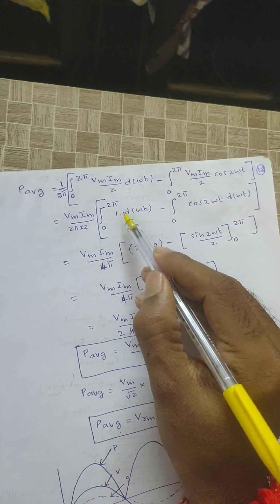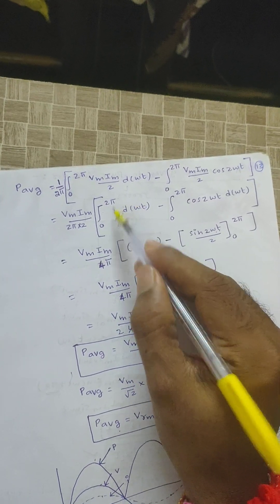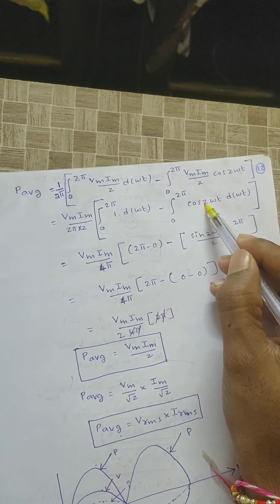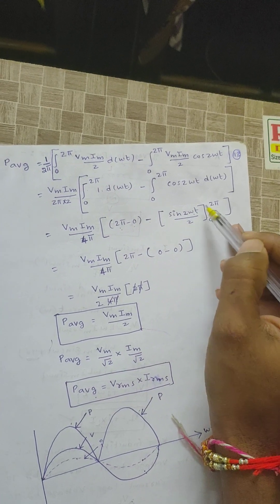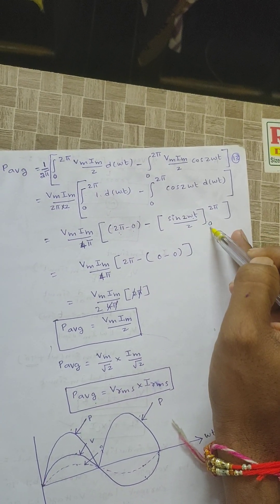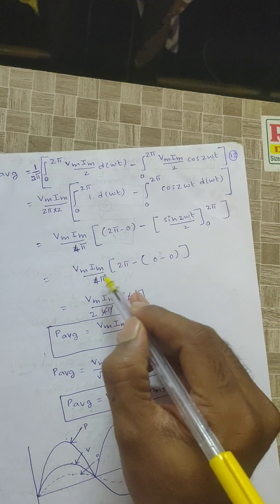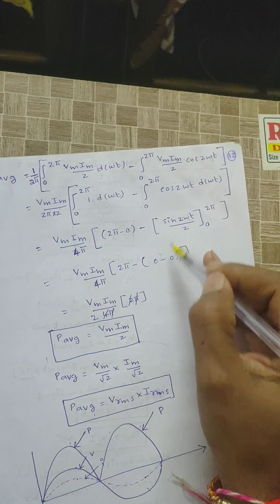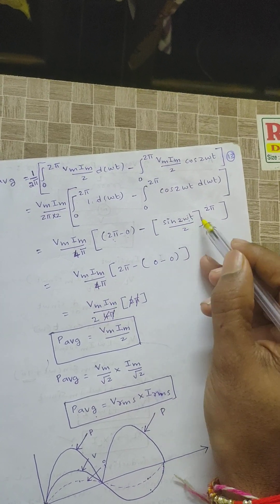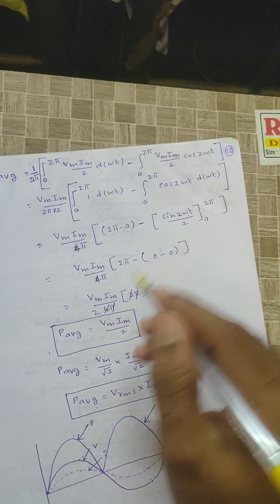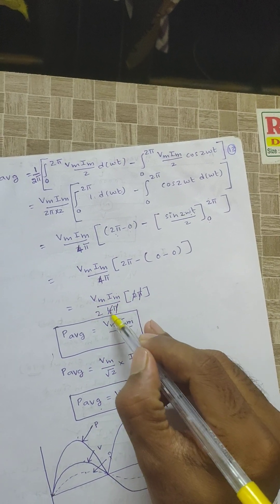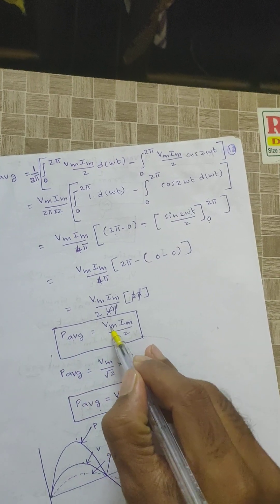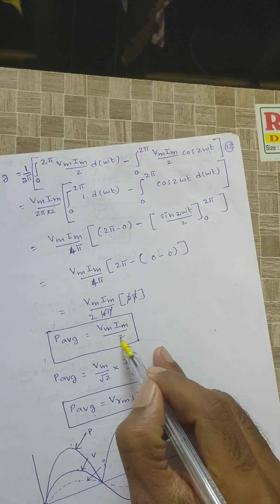Integrating: the integral of 1 gives ωt; substituting upper limit 2π and lower limit 0 gives 2π. The integral of cos(2ωt) gives sin(2ωt)/2, which evaluates to 0 at both limits. So the result is Vm × Im divided by 4π times 2π, giving P_average equals Vm × Im / 2.